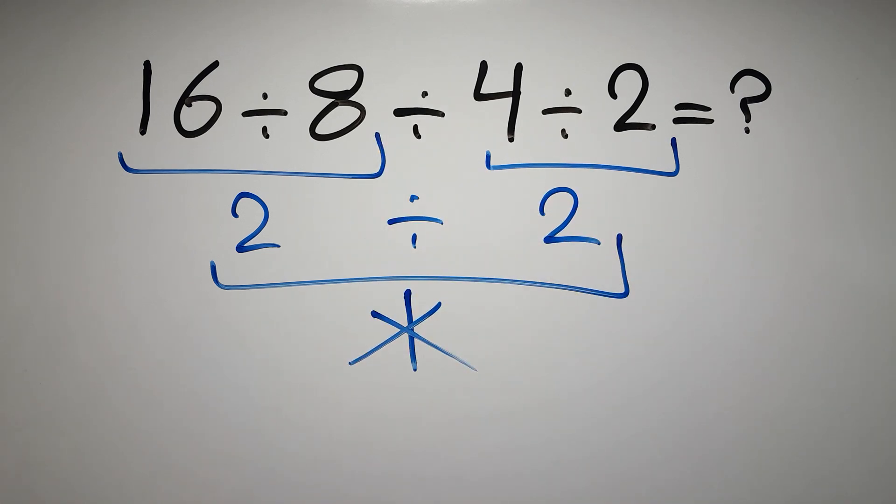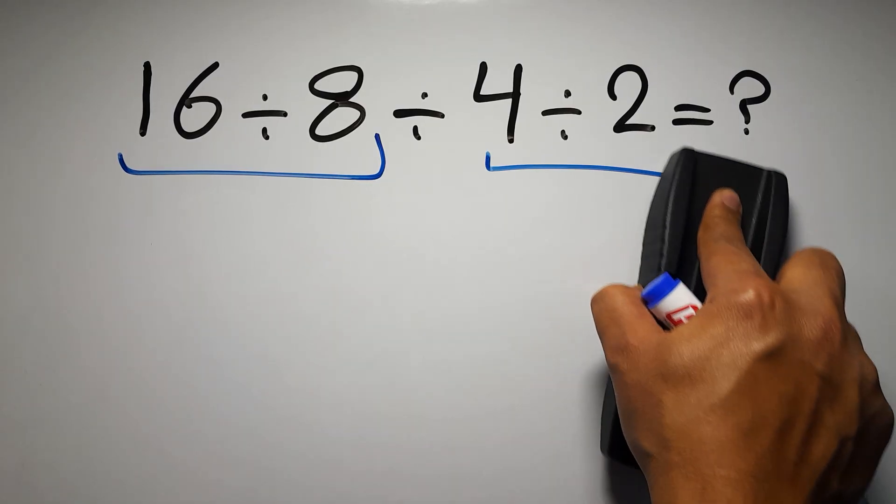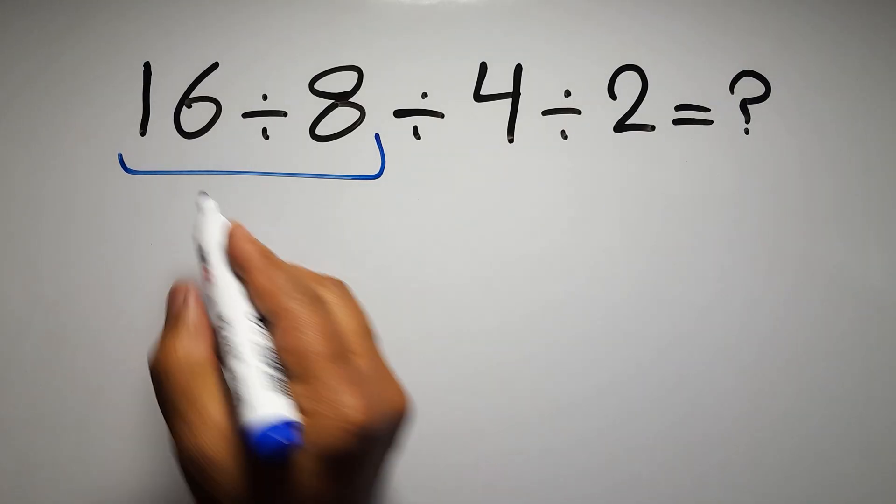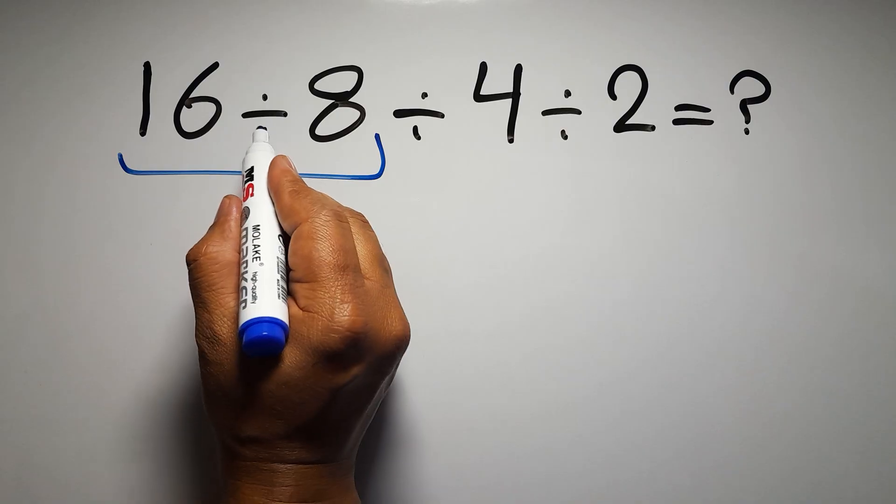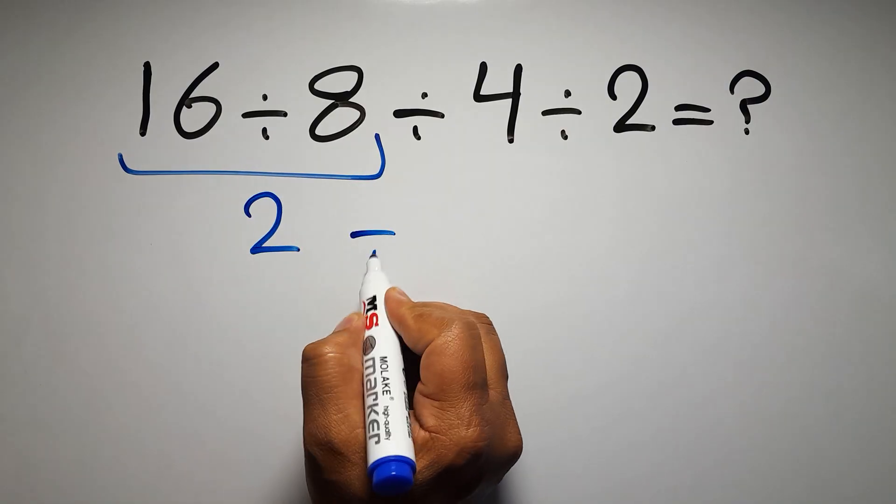So first this division: 16 divided by 8 which equals 2, so 2 divided by 4 divided by 2.